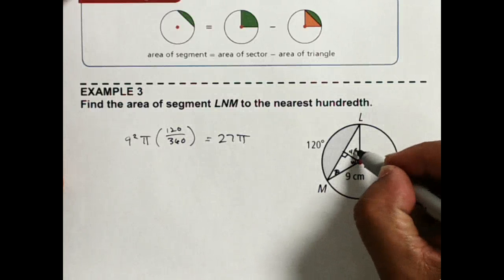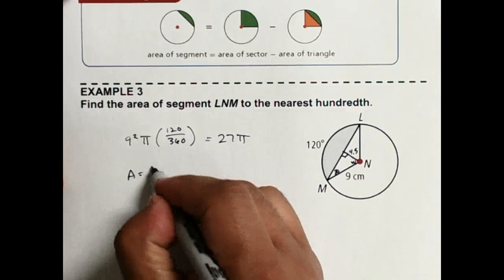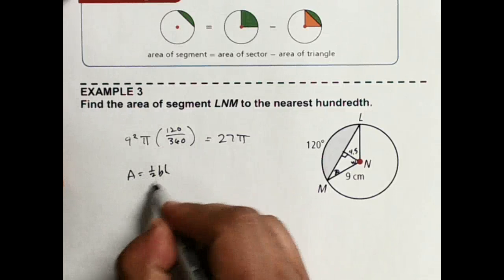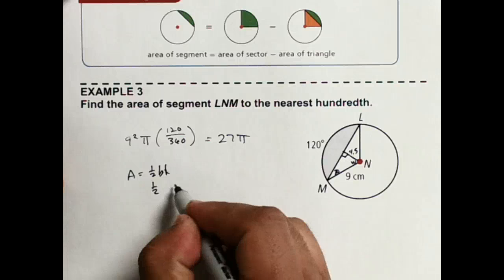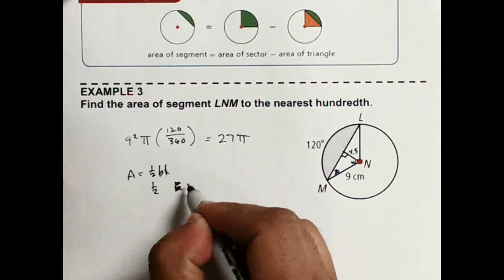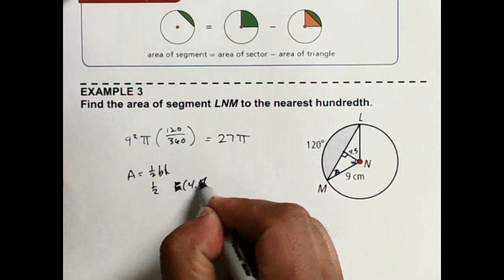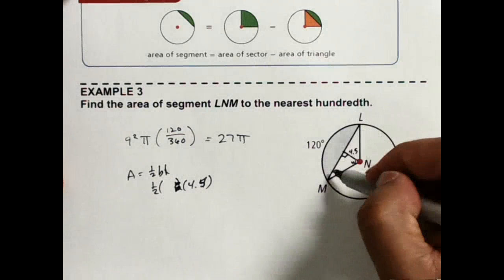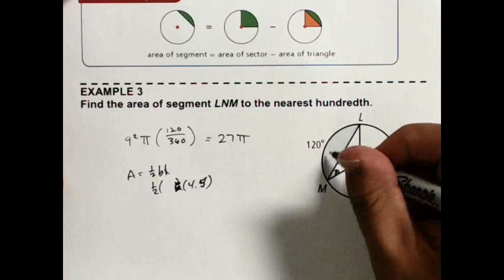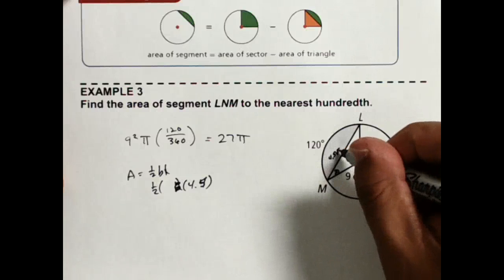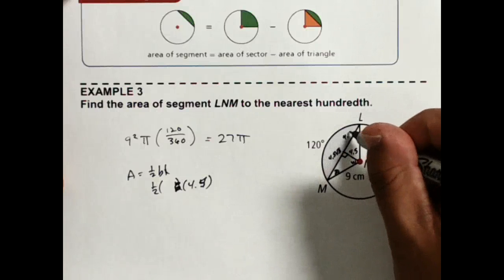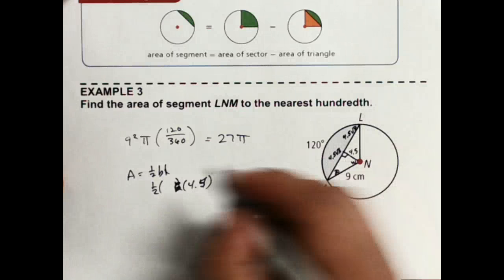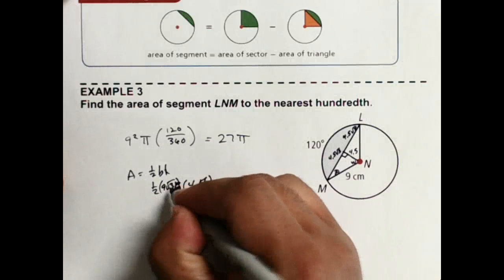So this part, my height is 4.5. I need the area is 1 half base times height. So I know that my height then is going to be 4.5, if I can write. This part right here, since this is 4.5, this is going to be 4.5 square roots of 3. This is 4.5 square roots of 3. So the entire length is actually going to be 9 square roots of 3.